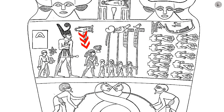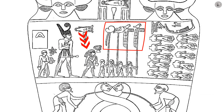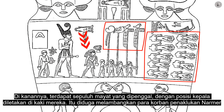In front of the pharaoh, there was a man with long hair followed by four standard bearers consisting of animal skins, a dog, and two eagles. To his right, there were ten decapitated corpses with their heads placed at their feet. This was thought to symbolize the victims of Narmer's conquest.